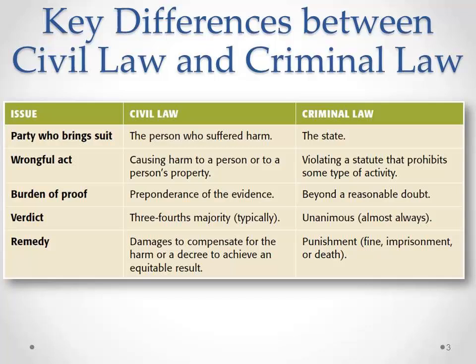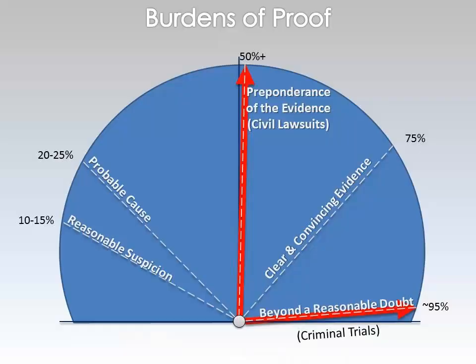Next is burden of proof. The person who brought the lawsuit has the burden — the responsibility to prove the case. The question is: prove it to what extent? In a civil suit, the burden is a preponderance of the evidence — just a little bit over 50% surety that that's what happened. If there is one smidgen over 50% certainty in the jury's mind, then the plaintiff in a civil suit has carried the day.